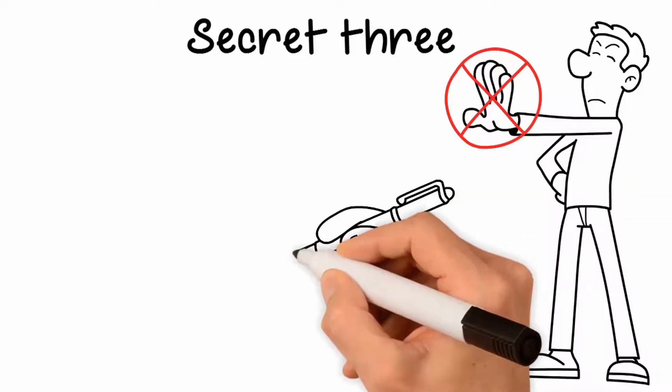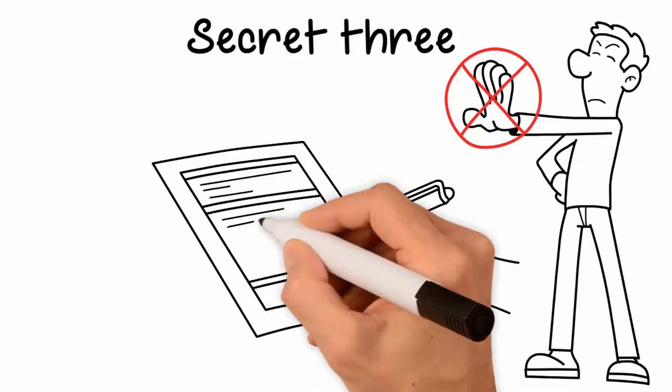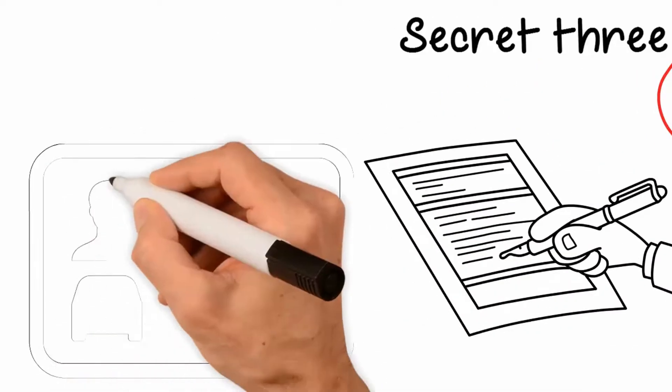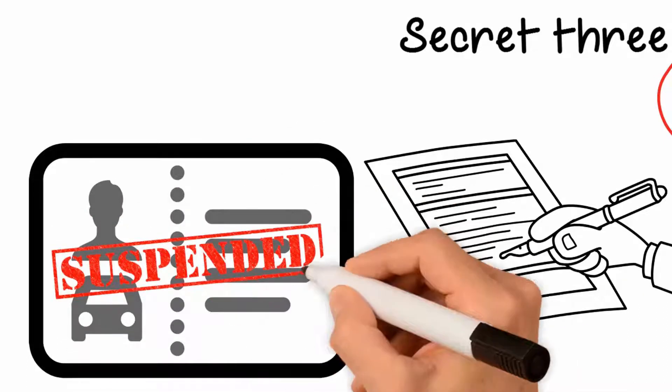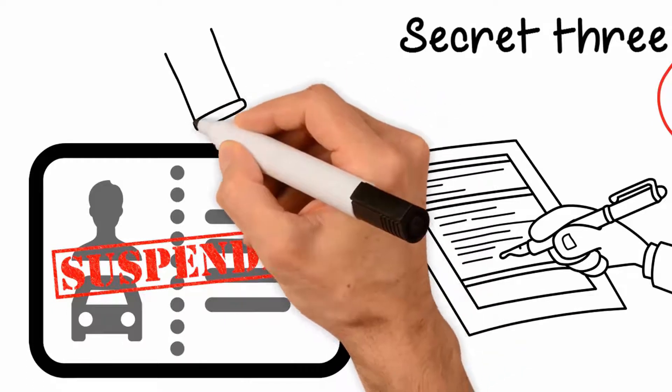consent rule, meaning you consent to taking the test at the station. Your refusal to take the test at the station can cause your license to be suspended for up to a year, depending on the state, even if you're not found guilty at trial.